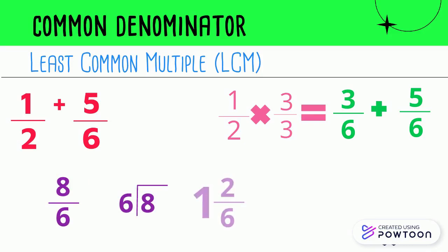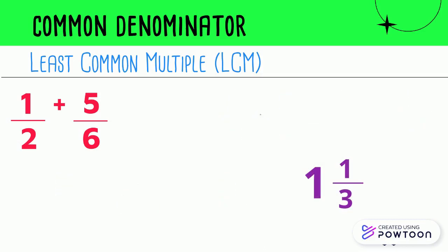And we get one and two over six, a mixed number, but it's not simplified yet. We have to simplify it to get one and one-half. Excuse me, one and one-third. When we get one and one-third, our one-half plus five over six equals one and one-third.